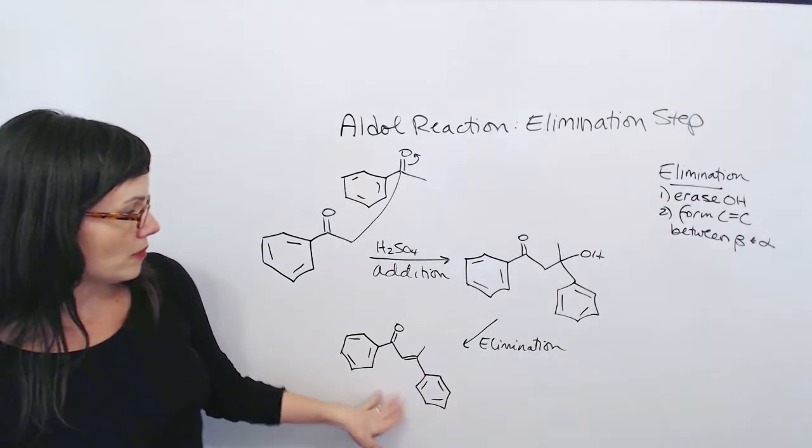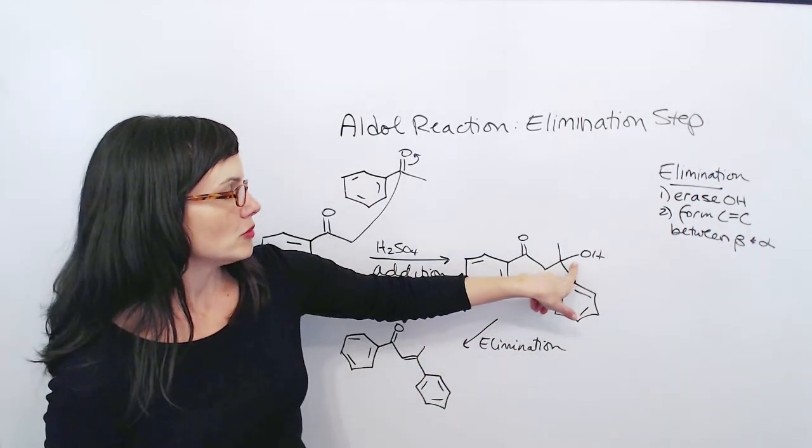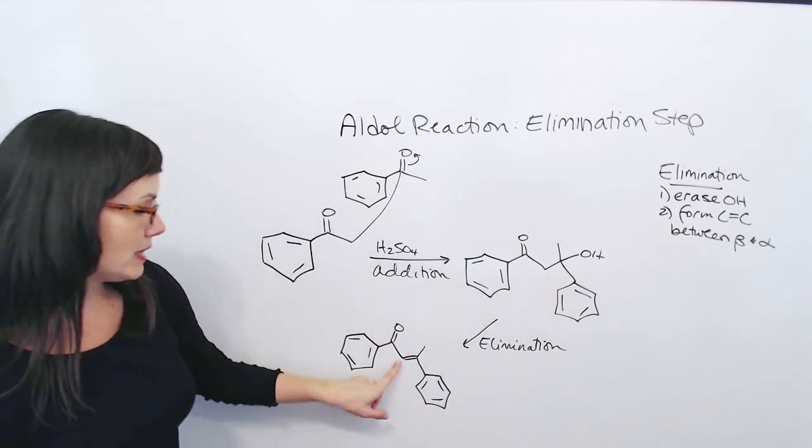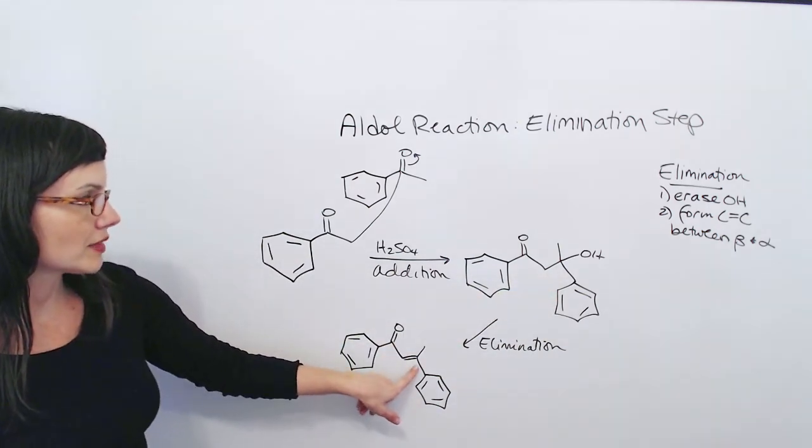But throughout the elimination step, my OH has been removed, eliminated, and I've formed a double bond between the alpha carbon and the beta carbon.